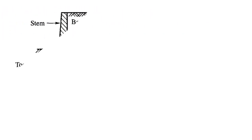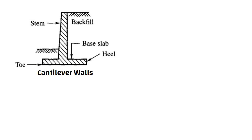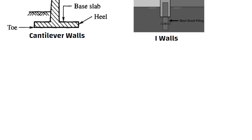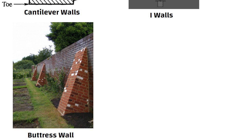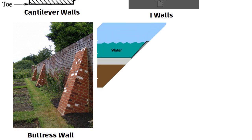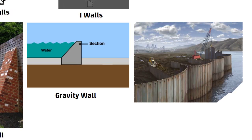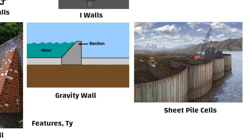Flood walls are usually constructed as cantilever walls, basic eye walls, buttress walls, gravity walls, and sheet pile cells. In this video, we will discuss the features, types, and benefits of flood walls as flood control structures.